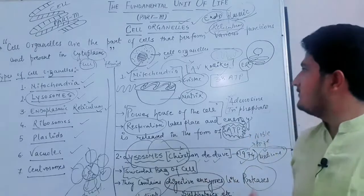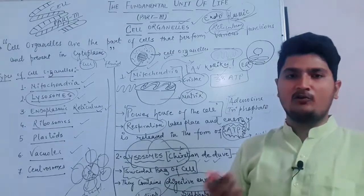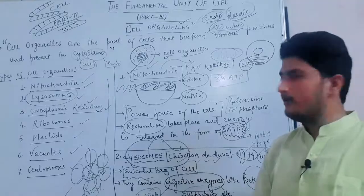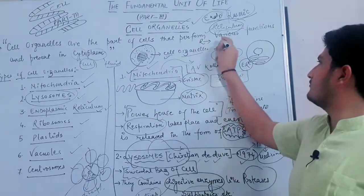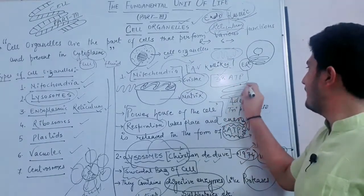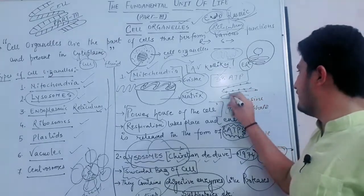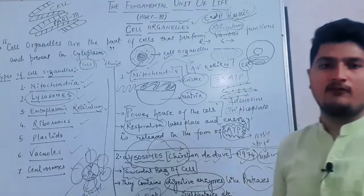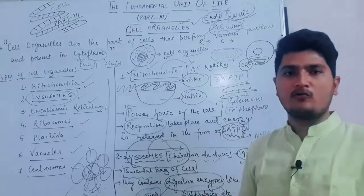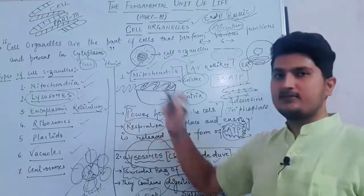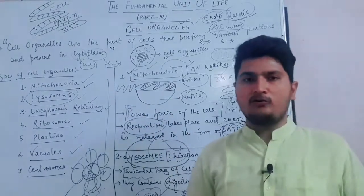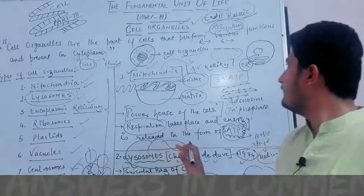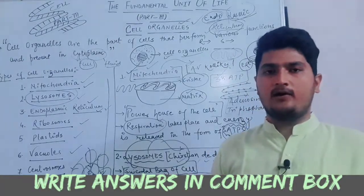We have to discuss the functions of RER and SER. When ribosomes are attached on the endoplasmic reticulum, its appearance becomes rough, so it is called rough endoplasmic reticulum. That rough appearance is due to the presence of ribosomes. When ribosomes are absent on the endoplasmic reticulum, it is known as SER — smooth endoplasmic reticulum. In the next video we will discuss the functions of endoplasmic reticulum. At the end of this video, the question for you is: who discovered mitochondria and who discovered endoplasmic reticulum, and when? That's all for this video, thank you.